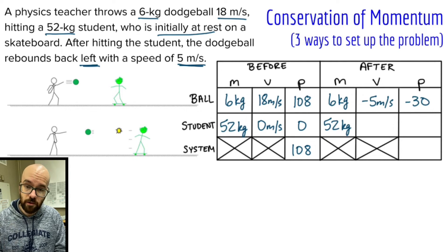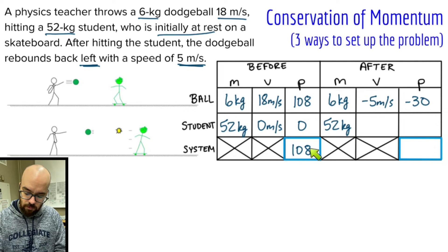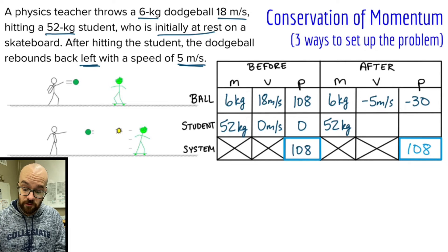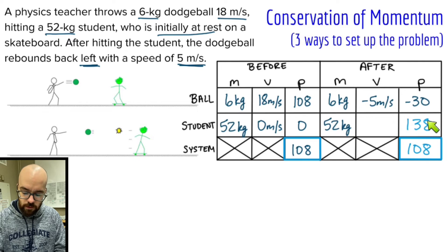The idea of conservation of momentum is that the total momentum of this two-object system should stay the same from before to after. So the total system momentum before — which is 108 — has to equal the total system momentum after, which is also 108. From there I can fill in the rest of the table. I know that negative 30 plus something gives me 108, so negative 30 plus 138 equals 108. I could also do 108 minus negative 30 to get that 138.